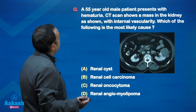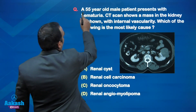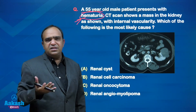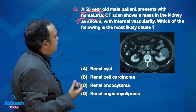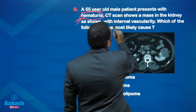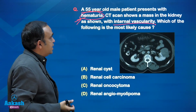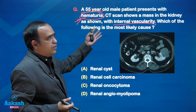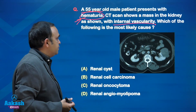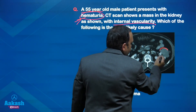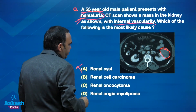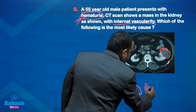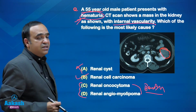A 55-year-old male presents with hematuria. Old age and hematuria immediately brings RCC to mind. CT shows a mass in the kidney with internal vascularity, which goes in favor of malignancy. Even without the image, the straightforward diagnosis based on history is renal cell carcinoma. Looking at the choices: renal cyst - no way; RCC is the answer. Oncocytoma and renal angiomyolipoma are both benign tumors, and the history and features here are suggestive of malignancy.